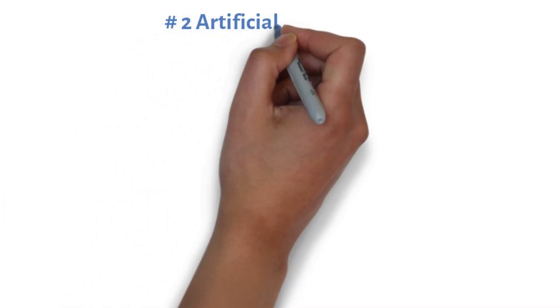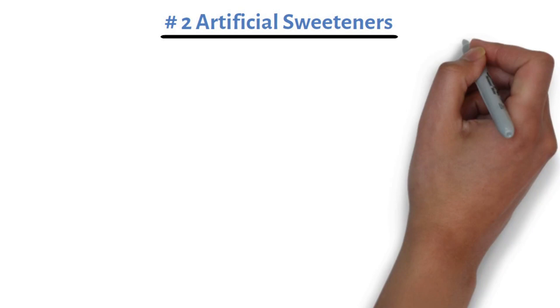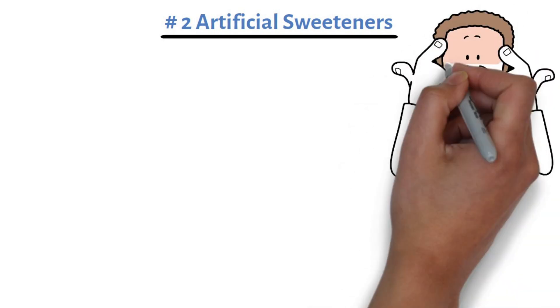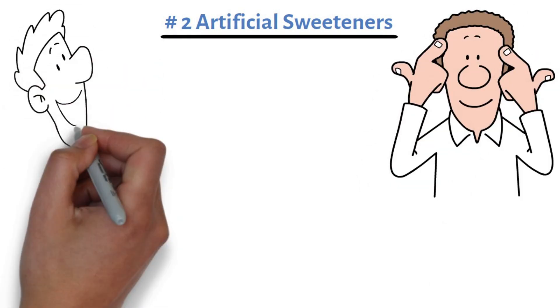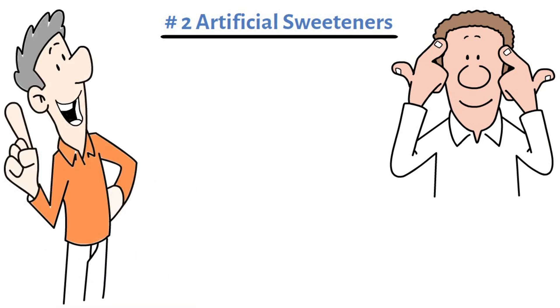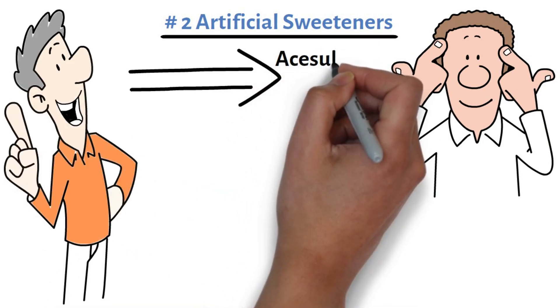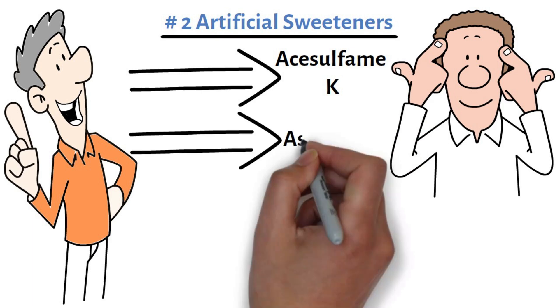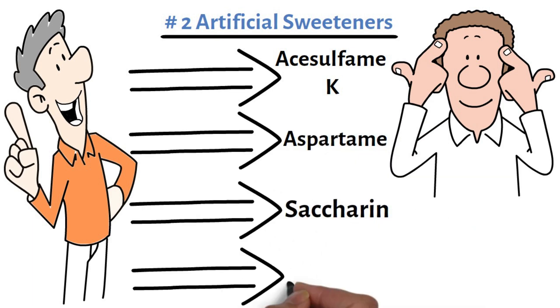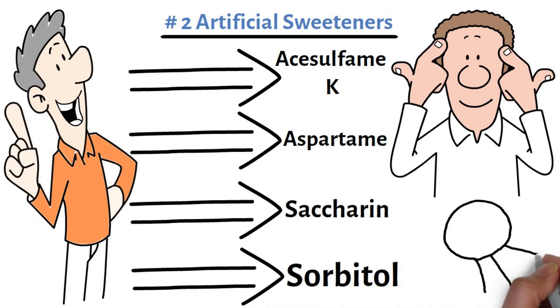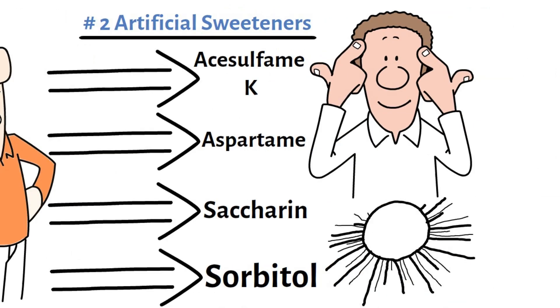Product number two, artificial sweeteners. Many of us opt for artificial sweeteners, thinking they're a healthier choice compared to sugar. However, some, like Acesulfame-K, aspartame, saccharin, and sorbitol, have been linked to various health issues, including cancer.